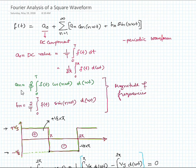The DC component, a0, can be evaluated with the help of this expression, and an, the magnitude of the cosine frequencies, can be evaluated with the help of this expression. bn can be calculated with the help of this one. Now if we assume a square waveform that is varying between plus Vs and minus Vs.